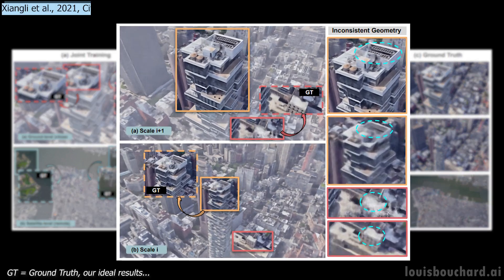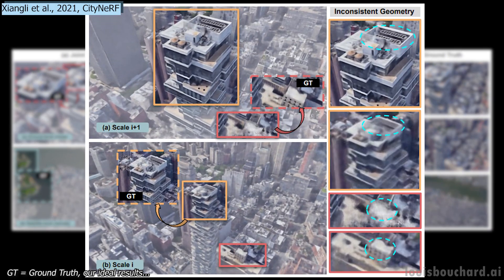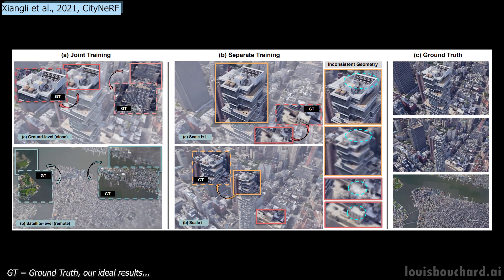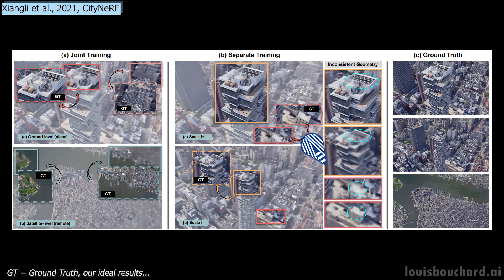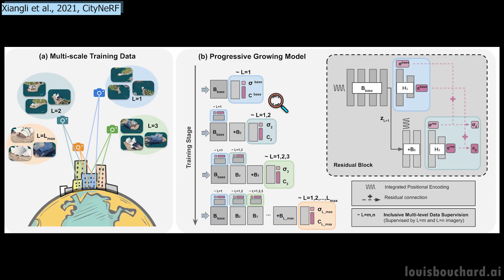This process is optimized for the convergence of the neural network using a loss function that gets us closer to the ground truth while training, which is the real 3D model we are aiming to achieve. As you can see here, the problem is that the quality of the rendered scene is averaged at the most represented distances and makes specific viewpoints look blurry, especially because we typically have access to much more satellite imagery than close views. We can try to fix this by training the algorithm with different scales independently, but as they explain, it causes significant discrepancies between successive scales, so you would not be able to zoom in and have a fluid, nice-looking 3D scene at all times.